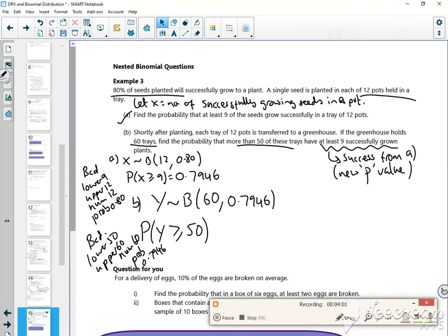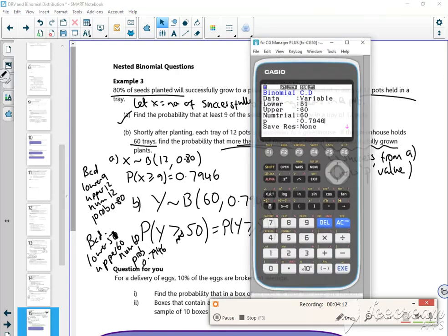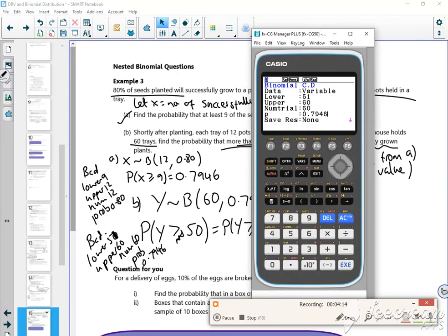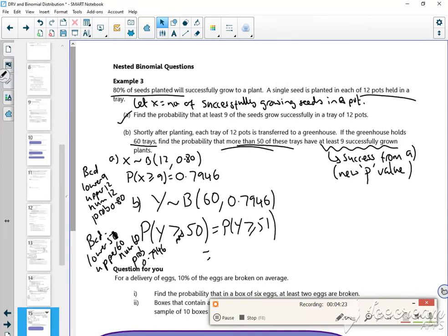Nearly fell into a hole there. It's more than 50, so it's Y is greater than or equal to 51. We have to have an equal to, so my lower is actually 51. You see, I did that on the calculator. That should give us roughly 0.1849.